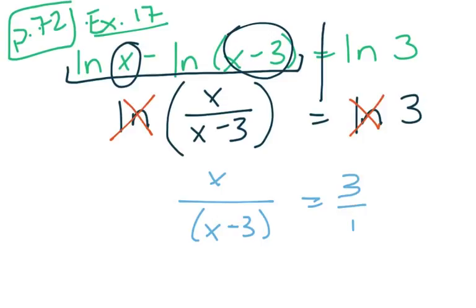The next step is to solve that, and we'll cross multiply. So 1 times x is just x, and here we'll have 3 times x minus 3. Hang on a second, let me get some more room to work.